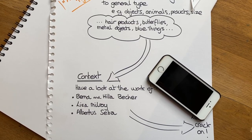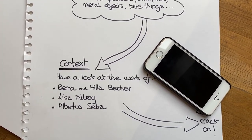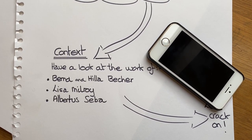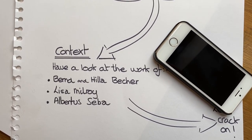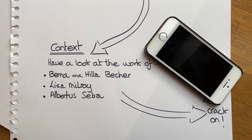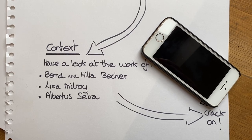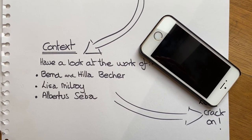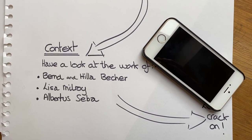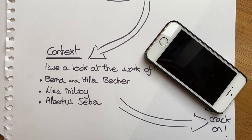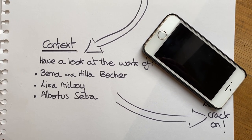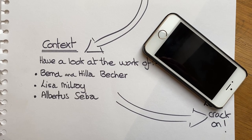While you're doing that, you might like to have a quick look online at the work of Bernd and Hilla Becher, who were industrial photographers. You might also like to look at the work of Lisa Milroy, a contemporary British artist who has spent quite some time looking at objects and the typology of things. I also mentioned the natural world — have a look at Alberta Seba, who did beautiful watercolor and pen-and-ink drawings of butterflies, sea creatures, and corals, just to see something in context.